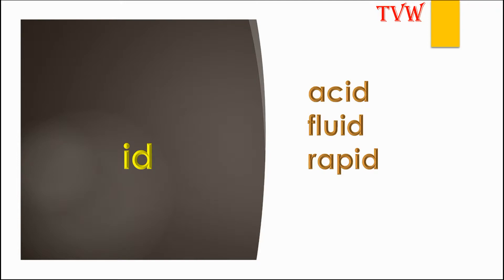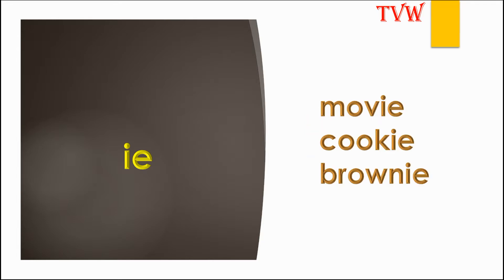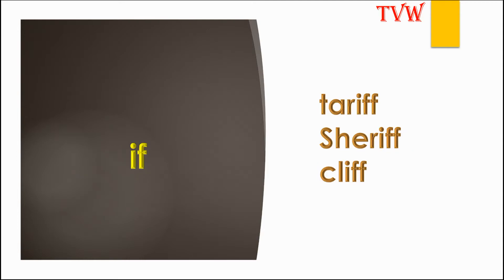The letters ID make the sound 'id' as in acid, fluid, rapid. The letters IE make the sound 'I' as in pi, lie, tie. The letters IE also make the sound 'E' as in movie, cookie, brownie.